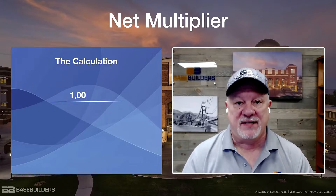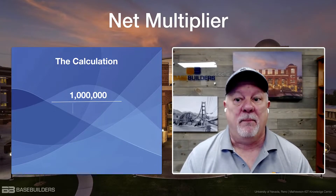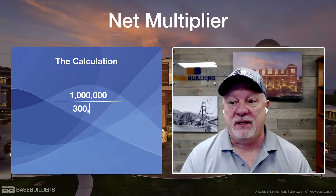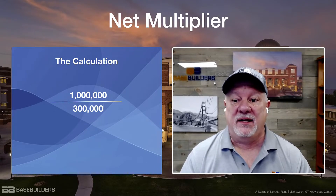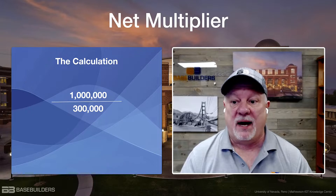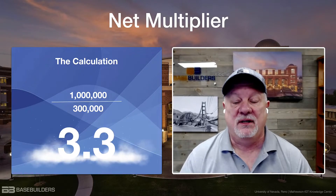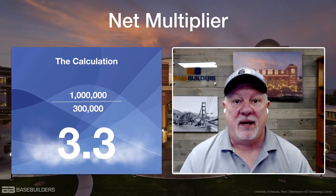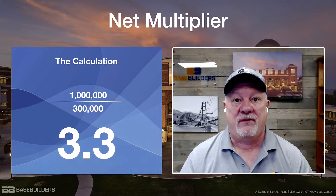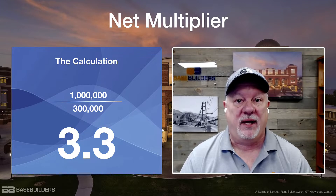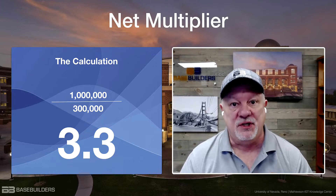Here's an example. If you do a million dollars in billings, and you divide that by $300,000, you end up at a 3.3 Net Multiplier. Not too bad.